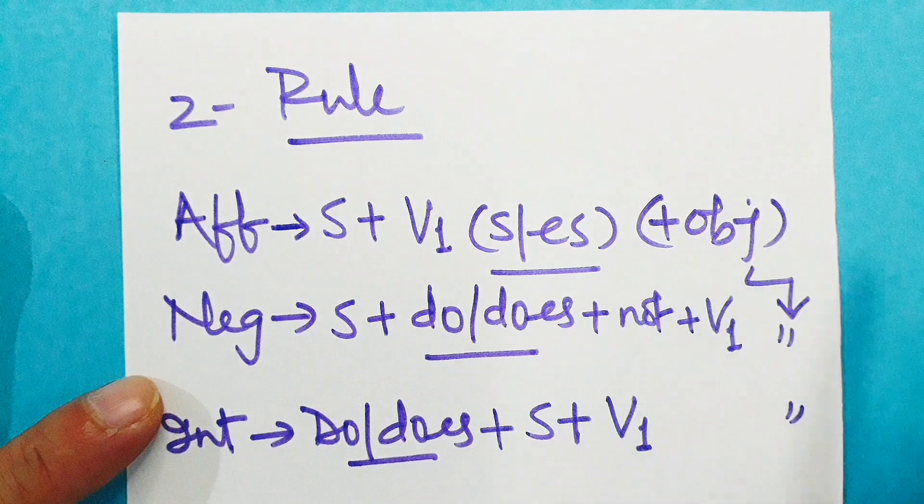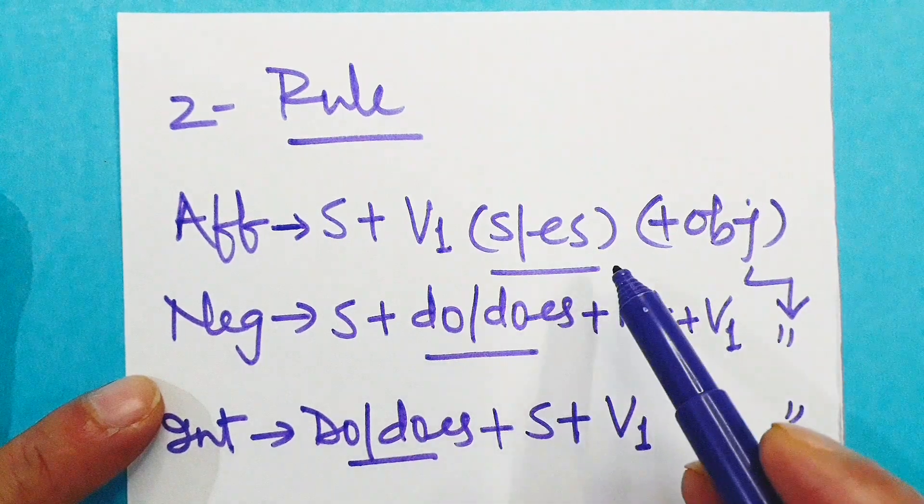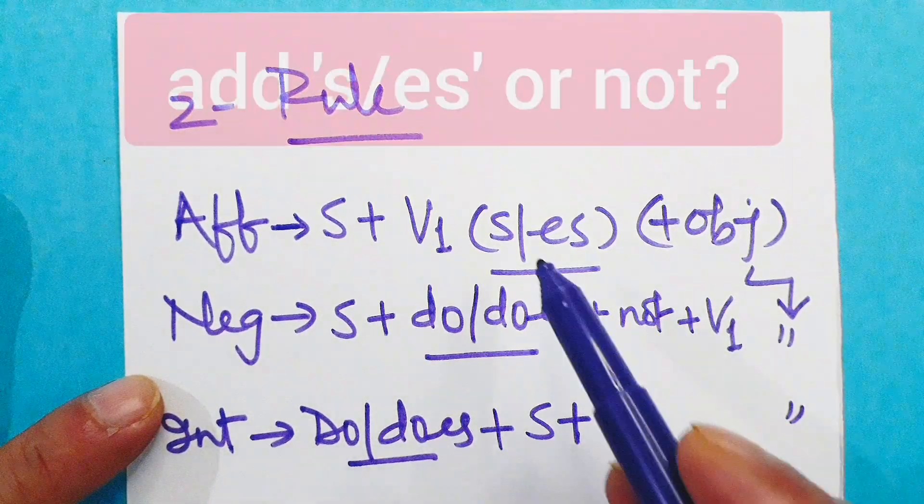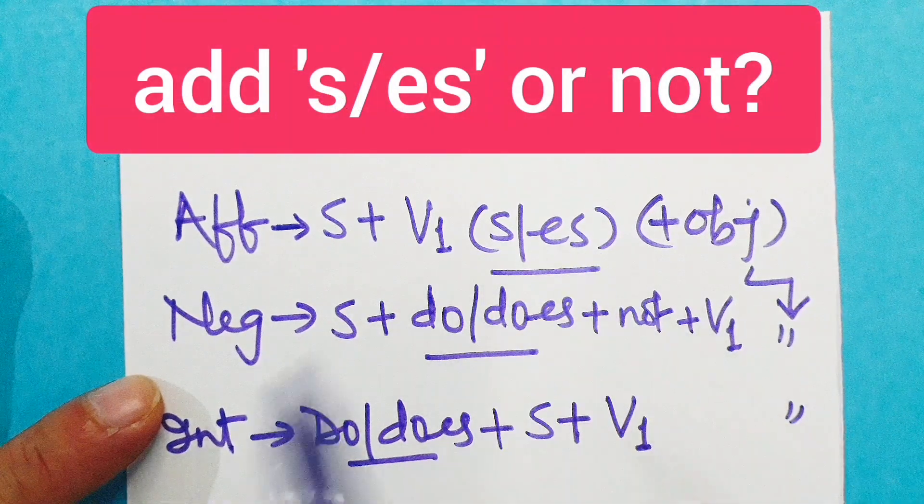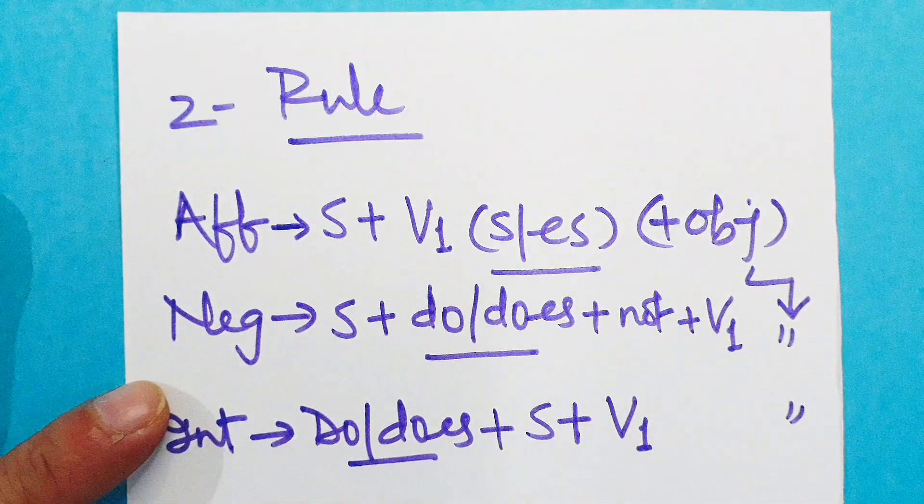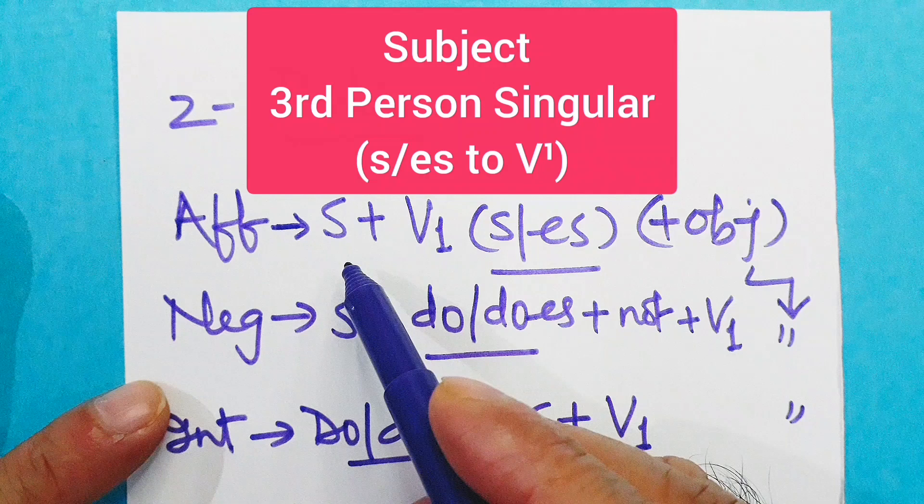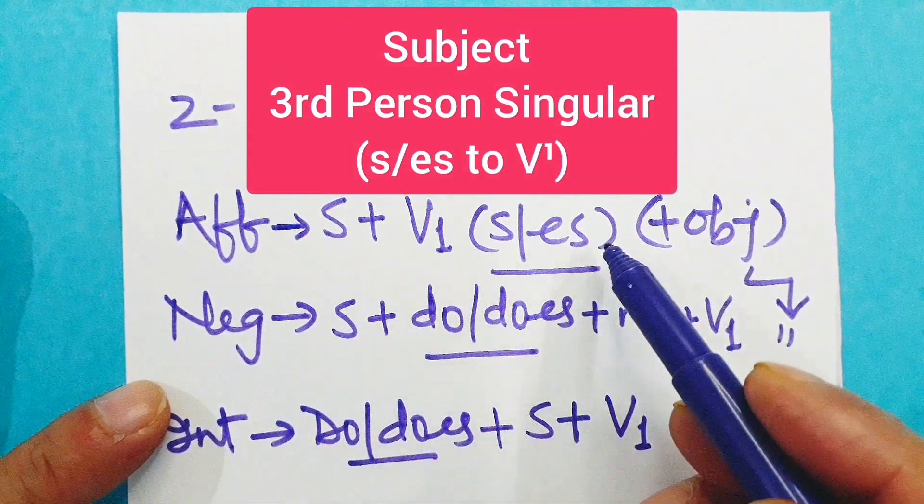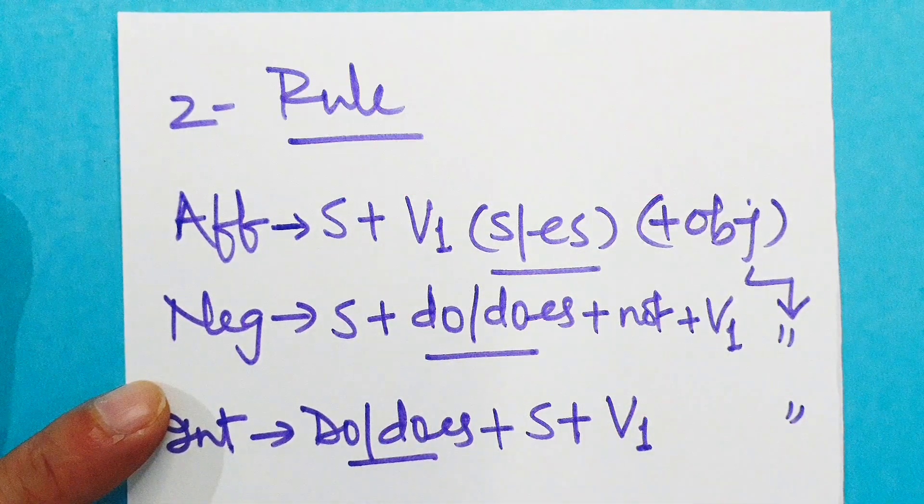Now the question arises: how to decide whether to use S or ES to V1 verb's first form or not? The answer is, when the subject is third person singular, we have to add S or ES to V1 verb's first form.